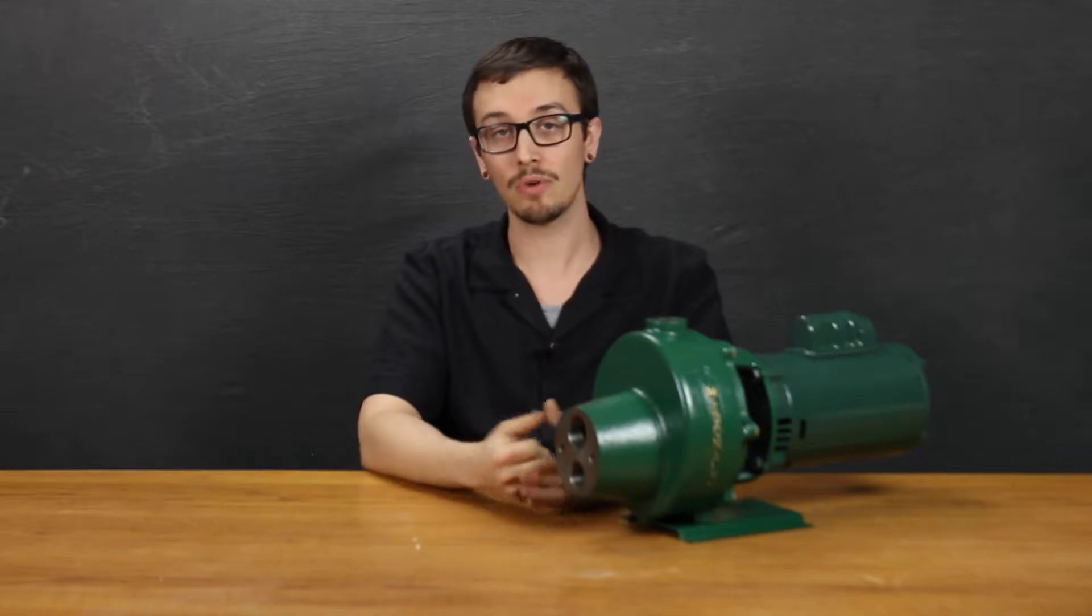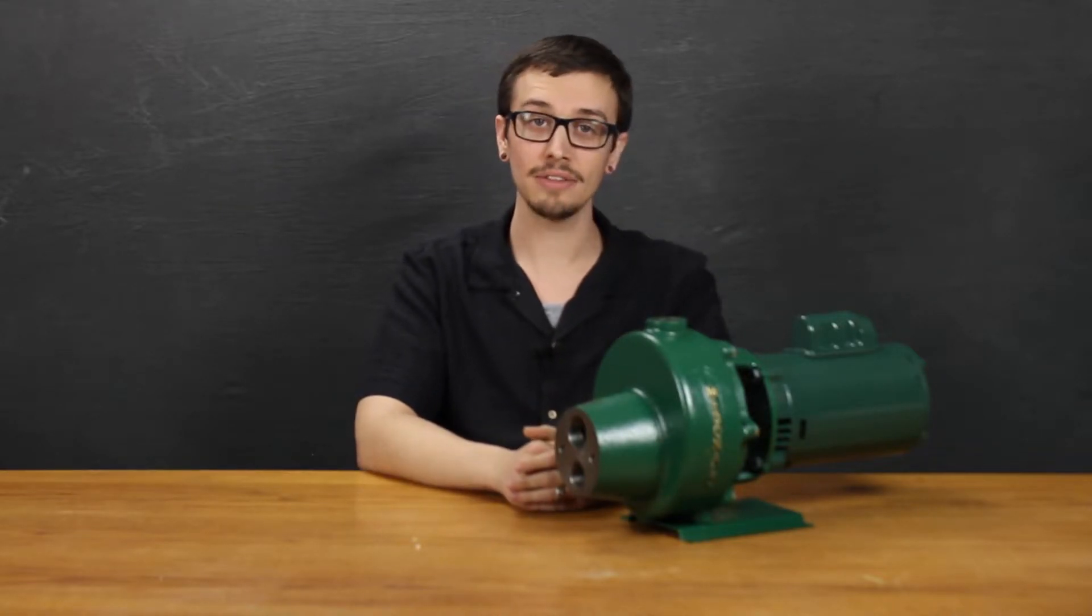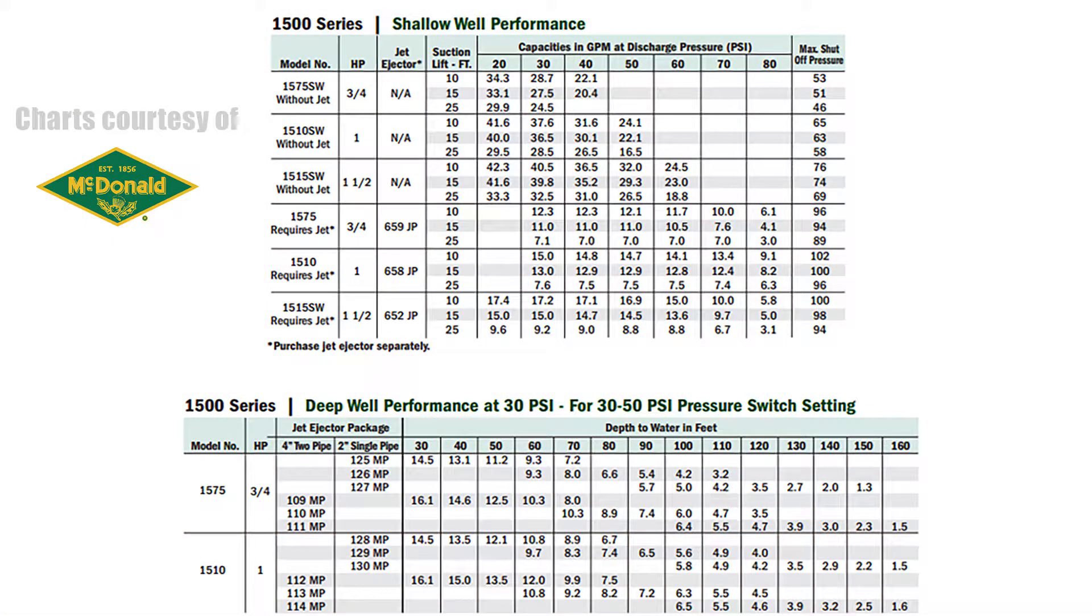In a shallow well, of course defined as 25 feet or less, the 1500 series are capable of producing up to 102 PSI with the addition of a shallow well ejector and 76 PSI without.